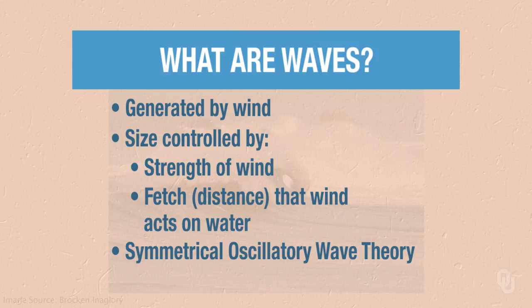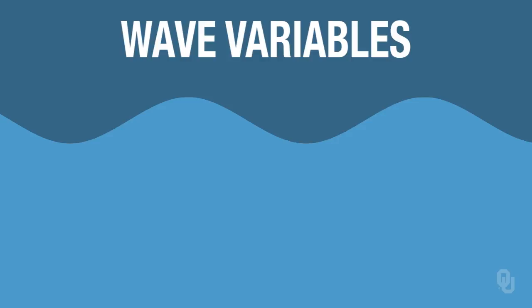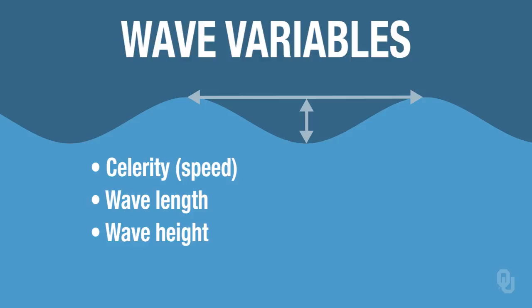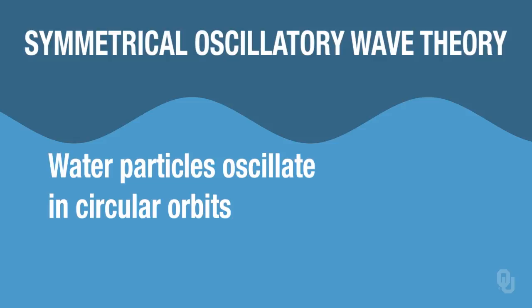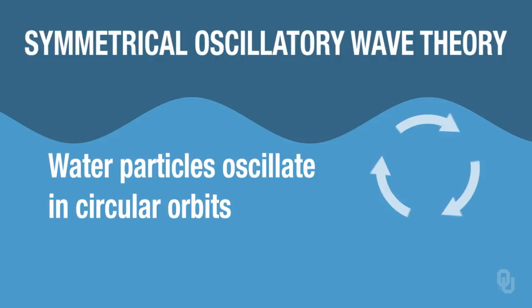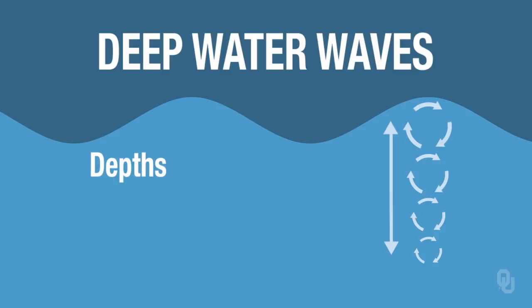There are various variables important in understanding waves. These include the celerity or speed of the wave, the wavelength, the wave height, the period — which is the time for two crests to pass one point — and the depth of the water. In the symmetrical oscillatory wave theory, the water particles oscillate in circular orbits, as this diagram shows. The water moves but follows circular orbits as the waves move. For deep water waves, orbital diameter decreases downward. For depths less than one half the wavelength, there's little disturbance of the bottom sediment.